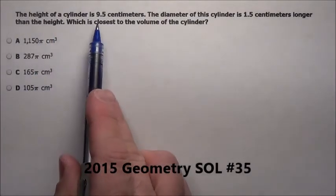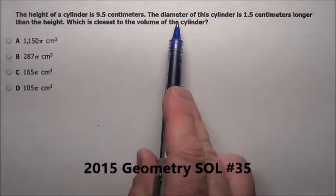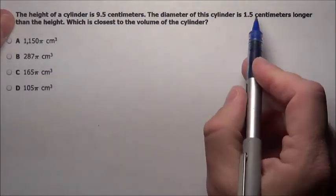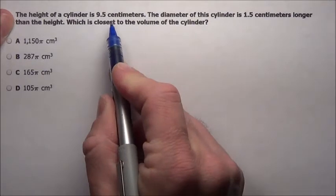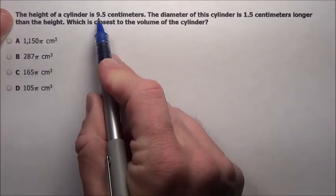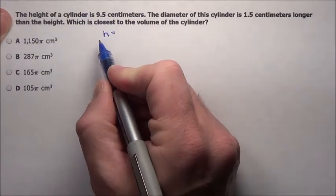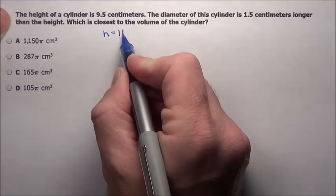Problem 35 says the height of a cylinder is 9.5 centimeters. The diameter of the cylinder is 1.5 centimeters longer than the height. Well, if it's 1.5 centimeters longer than the height, and the height is 9.5, I just add 1.5 to that. That means the height 9.5 plus another 1.5 is going to be 11.